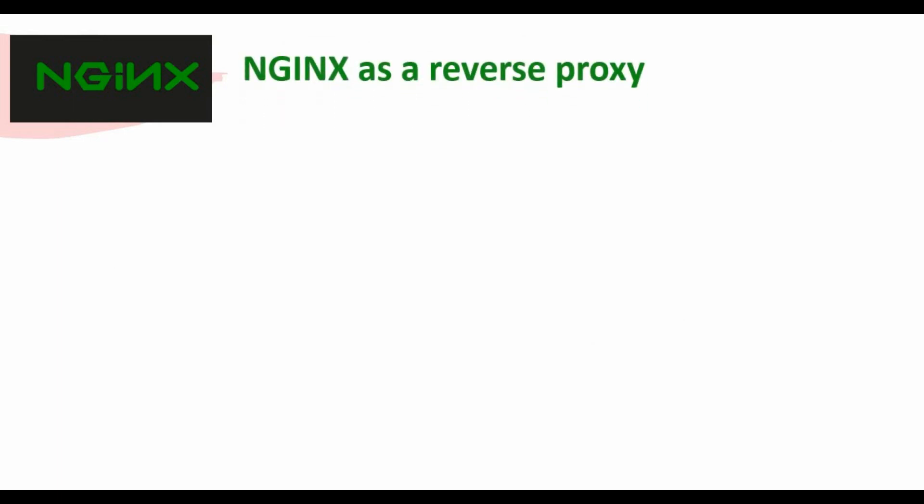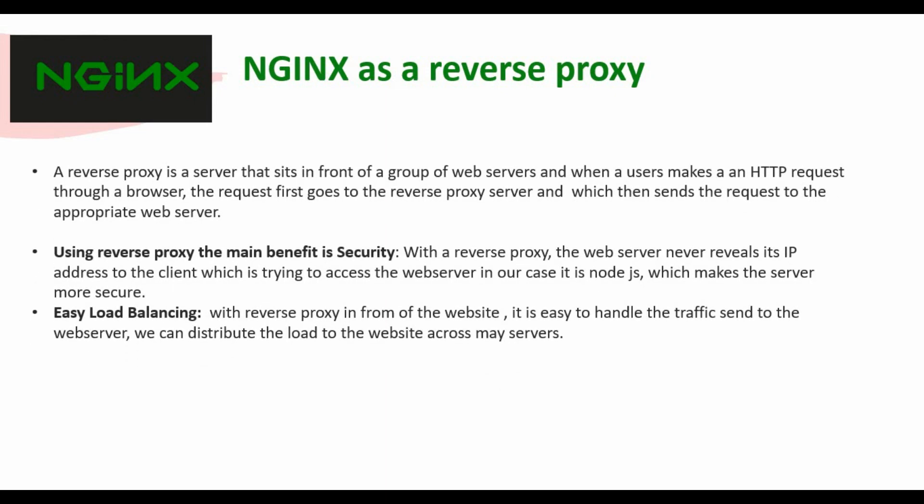If you don't know what Nginx is and why it's used as a reverse proxy, here's a brief explanation. A reverse proxy sits in front of a group of web servers — in our case, the Node.js app. When a user makes an HTTP request, the request goes to the reverse proxy first, which then forwards it to the appropriate web server, and the content is returned to the end user. The main benefit is security: the backend web server never reveals its real IP address to the client, making the Node.js server more secure.